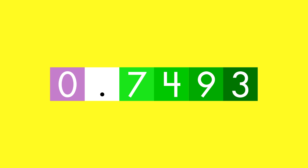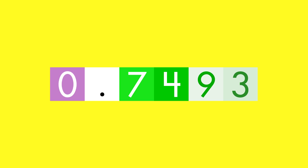Rounding decimal numbers is very similar to rounding whole numbers. To round to the nearest thousandth, look at the digit to the right. Since it is less than five, round down.